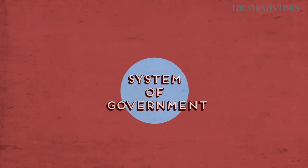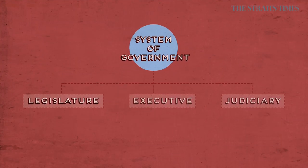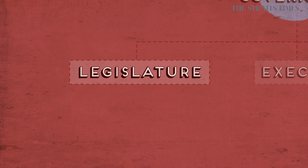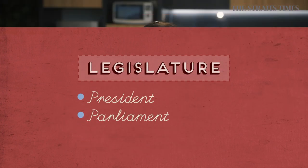There are three branches of government in the Singapore system, and parliament falls into the legislature branch, which also comprises the president. But that's generic governance stuff. To get specific — who is the PAP? Who is WP? Who is SDP? To get into that, we need to go into something called constituencies.